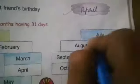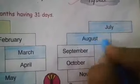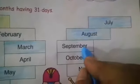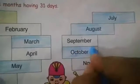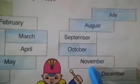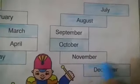July has 31 days. August has 31 days. September has 30 days. October has 31 days. November has 31 days, so we will color it.